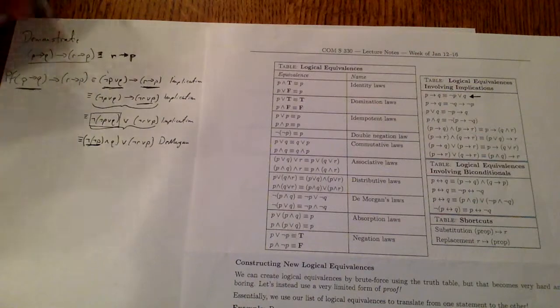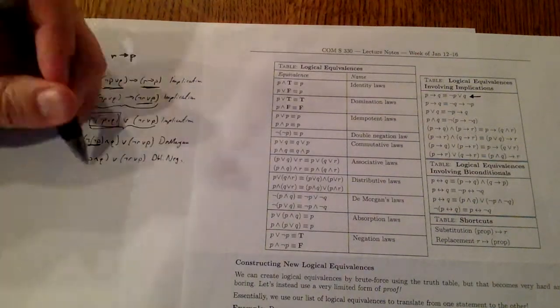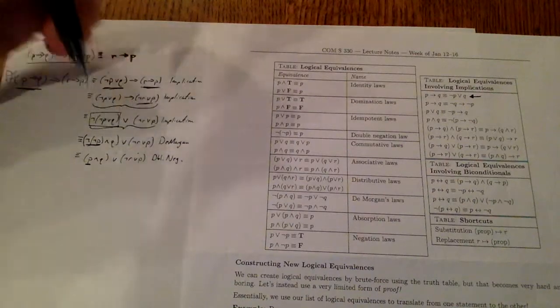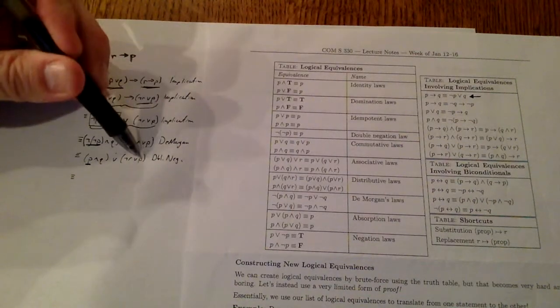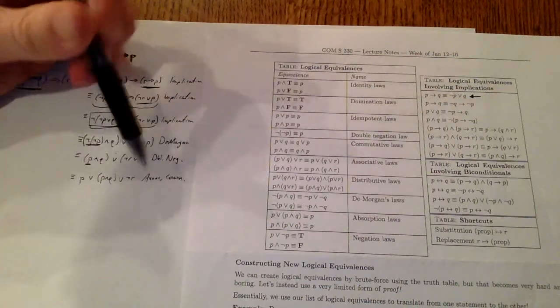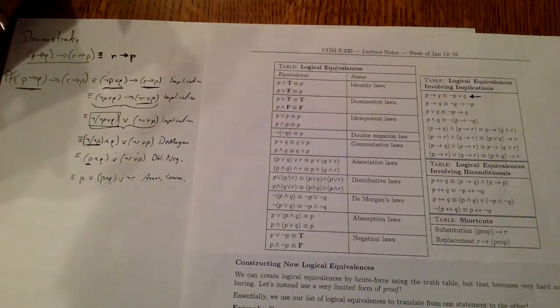Now I see two negations in front of the same variable. Let's use double negation. Now I see that there's an or symbol and an or symbol here, so these parentheses are not important. In fact, we can rearrange things, and I want this P to be closer to this P, so I'm going to rearrange. And the reason I could do that is due to the associativity and commutativity laws.